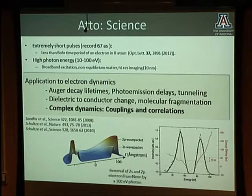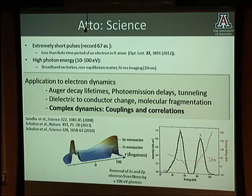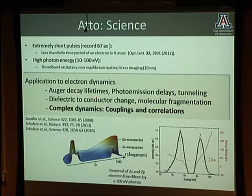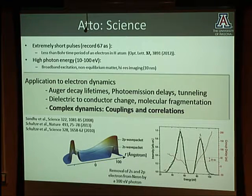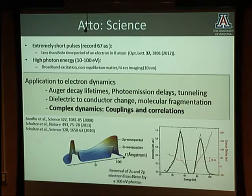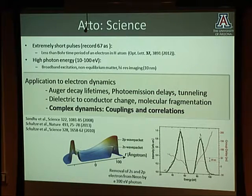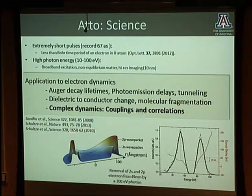My talk is about what we can do with what we have already right now. People have already applied attosecond pulses to understand how electrons relax in atoms and molecules through auto-ionization and Auger decay. There has also been an interesting example of photoemission delays: if you ionize a neon atom with a 100 eV photon, neon has 2s and 2p electrons, and the question is whether there is any delay between when the 2s or 2p wave packet enters the continuum.